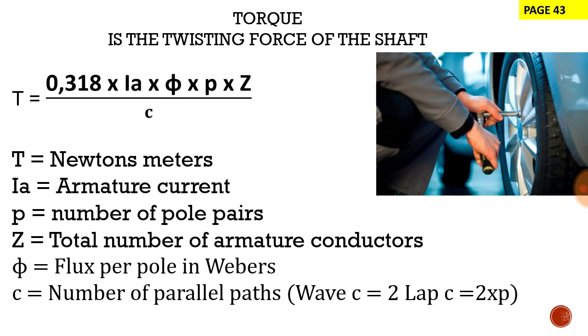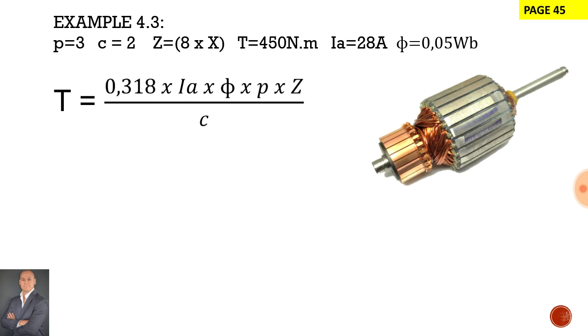Now this calculation comes from example 4.3 inside of our textbook, and the aim of this exercise is to determine the total number of conductors first, and then the second part of the calculation is to calculate the number of slots.